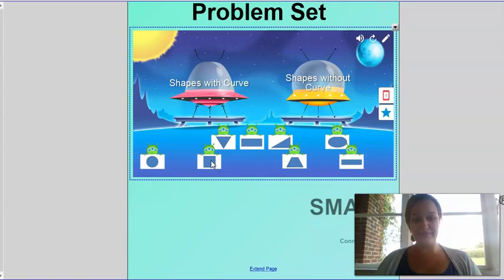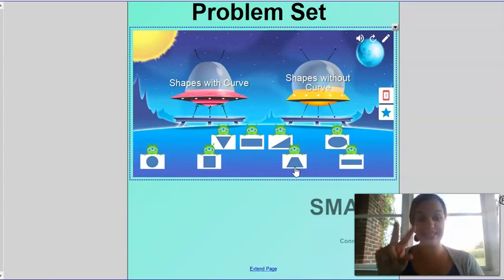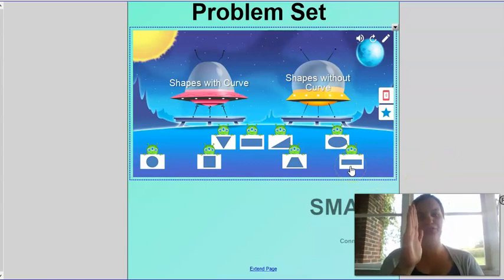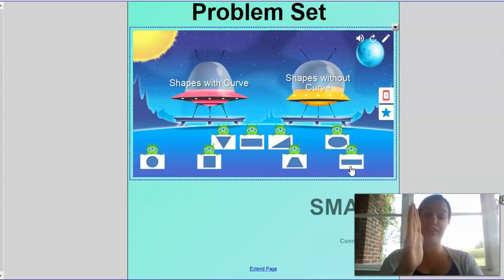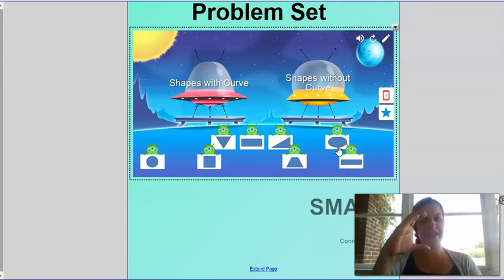Let's look at this one — straight or curved? Does this shape have curved lines? No, just straight lines, very good. Straight lines in our rectangle or curved lines? Straight lines. Does it have straight lines? Yes, yes it does — very good!